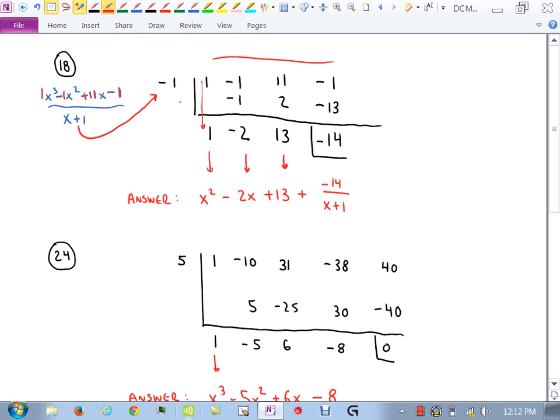Bring this down. That's 1. Negative 1 times 1 is negative 1. Put it here. Add down. Negative 2. Multiply negative 1 times negative 2 gives me 2. Add straight down, you get 13. Negative 1 times 13 gives me negative 13. Add straight down, you get negative 14. Now the answer, we use the 1, the negative 2, and the 13, and then our remainder.